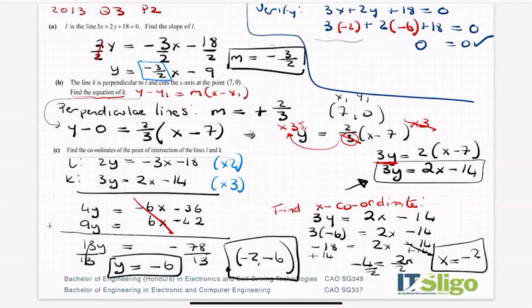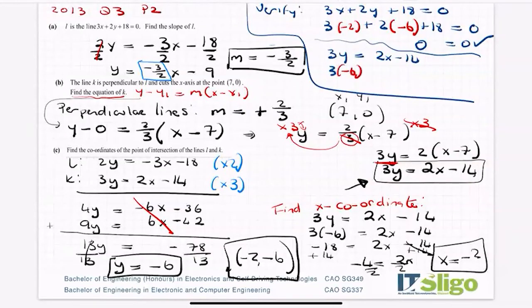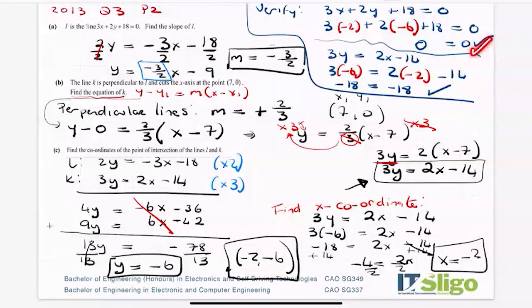It's simultaneous equations and it's the point two lines have in common, so I have to also take k and see if it works. For k: 3y equals 2x minus 14. Substituting: 3 times minus 6 is minus 18, and 2 times minus 2 is minus 4, minus 4 minus 14 is also minus 18. So the left equals the right. I have verified that the solution works for both lines.